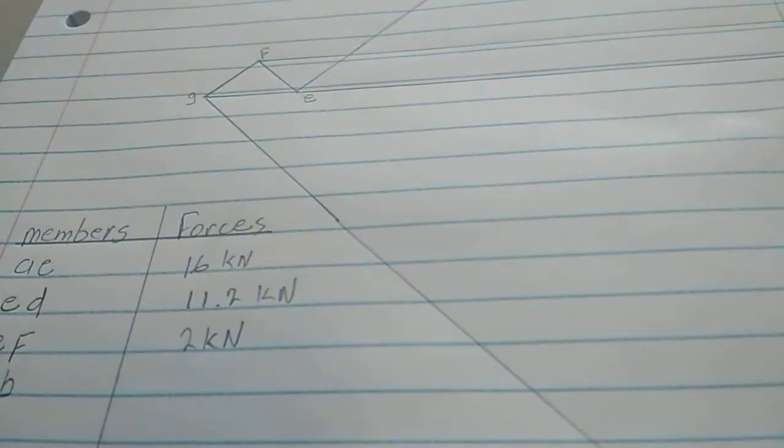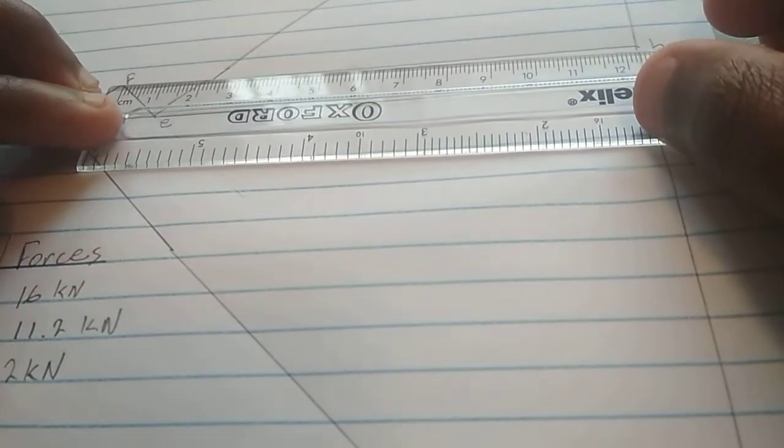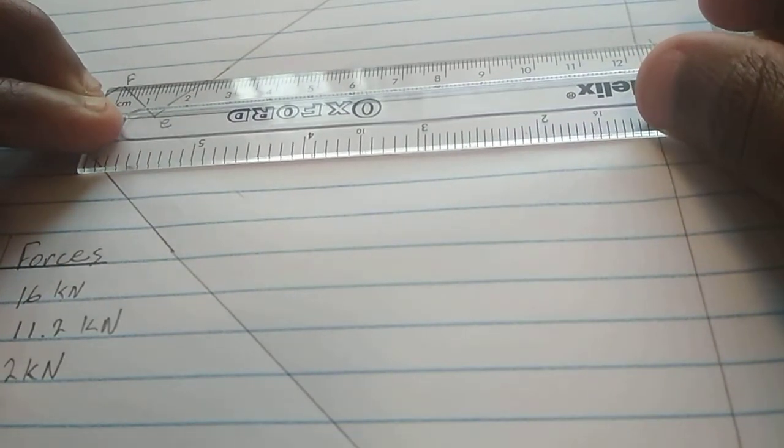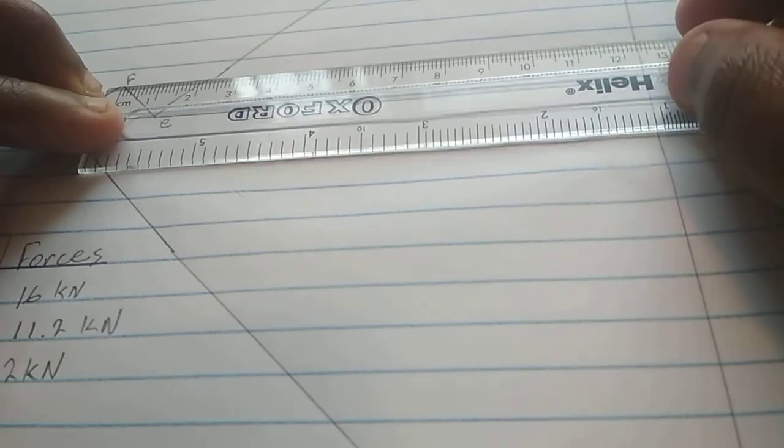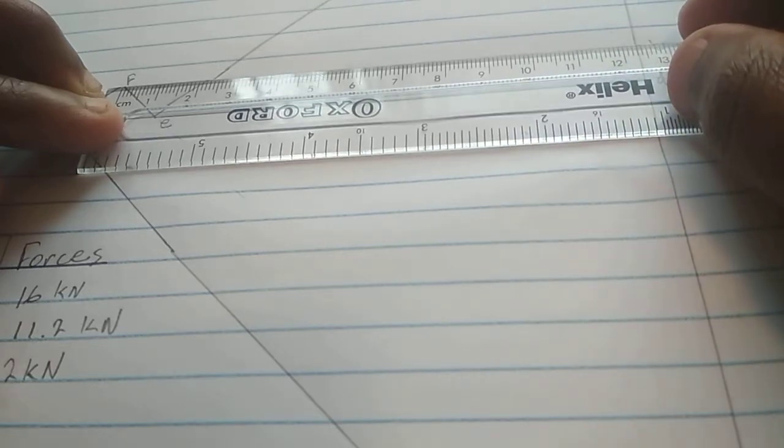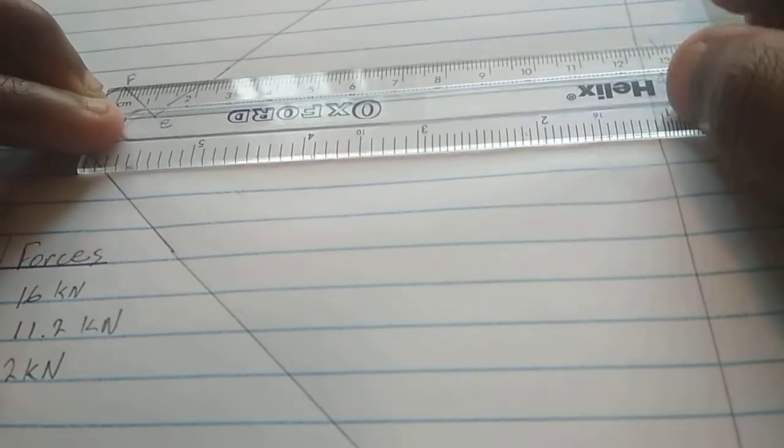FB. There is F plus B. It's about 12, 12.3, 12.3 kilonewtons.